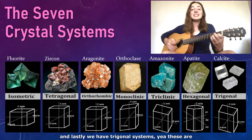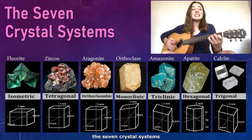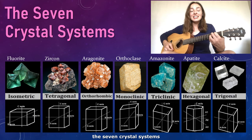And lastly, we have trigonal systems. Yeah, these are the seven crystal systems.